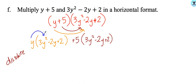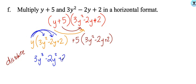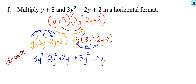Remember we're going to add our exponents. y times 3y squared is 3y cubed. Multiply y by negative 2y — the coefficient drops down and you've got two y's, so negative 2y squared. Then y times 2 is positive 2y. Keep going with the 5: 5 times 3 is 15, so positive 15y squared. 5 times negative 2 is negative 10, so negative 10y. And last, 5 times 2 is positive 10.